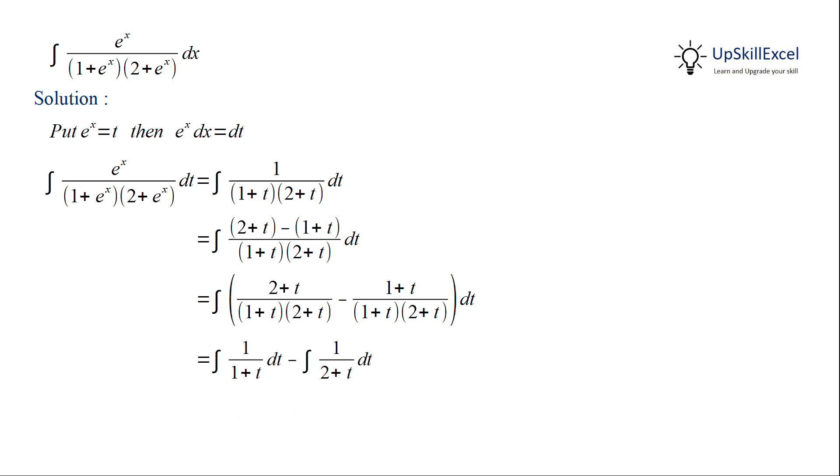We know that integral of 1 over 1 plus t is equal to log of absolute of 1 plus t. Similarly, integral of 1 over 2 plus t is log of absolute of 2 plus t. Here we have a difference of two logarithmic terms, hence we can rewrite as logarithm of division, giving us log of absolute of 1 plus t over 2 plus t plus c.